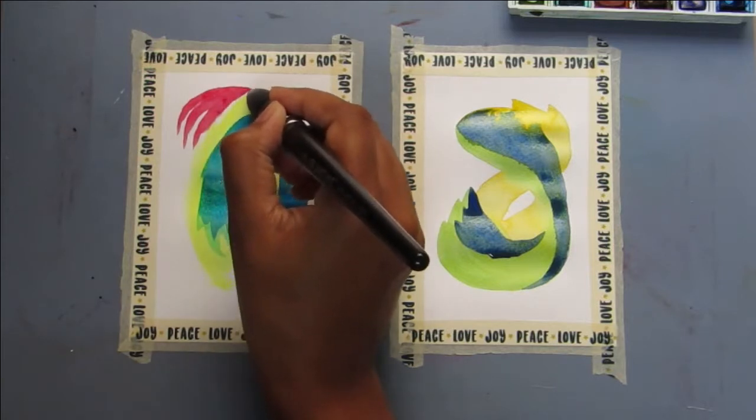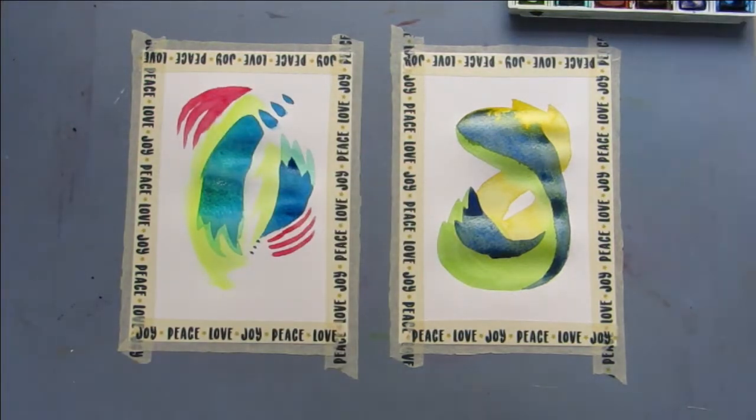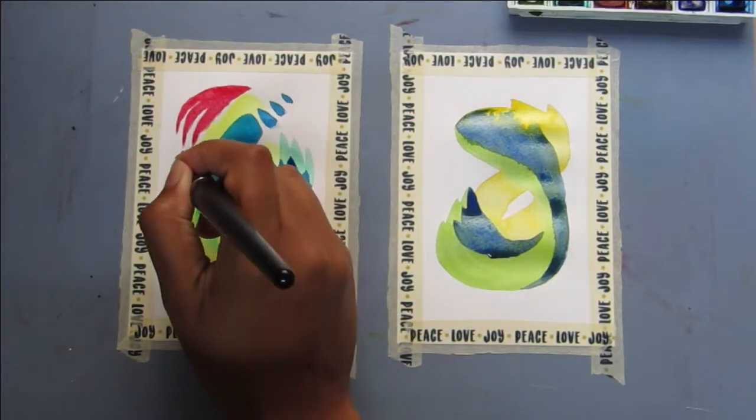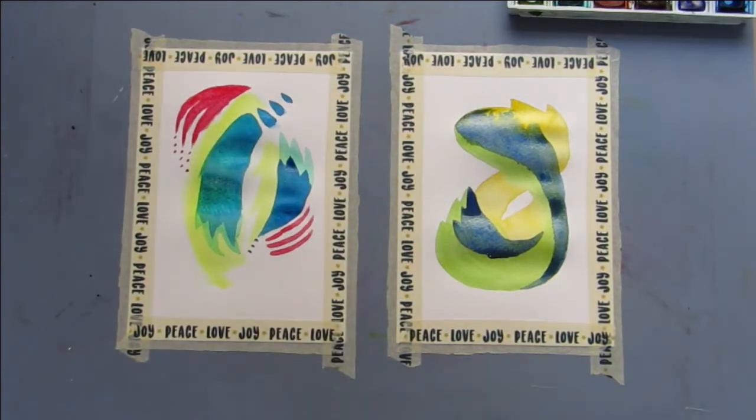Once all of this had dried, I only put one layer of paint for each illustration because I wanted it to be quite light. I then went in with some Derwent graphic line paint markers or paint pens. Let's see what do they call themselves? They call themselves paint line painter. But yeah they're just paint pens.